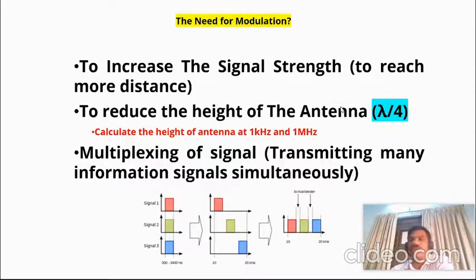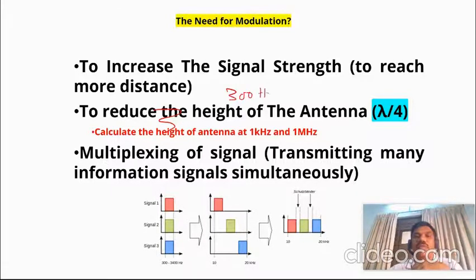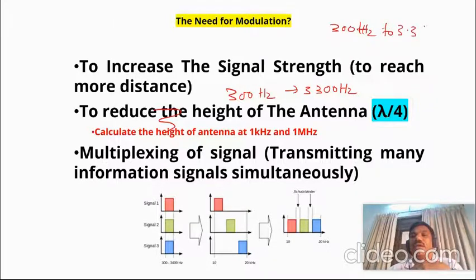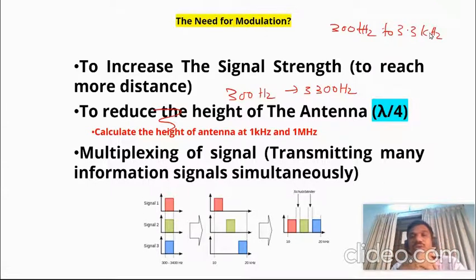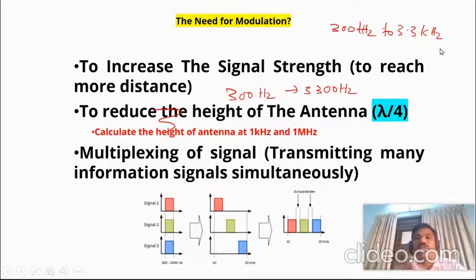Our audible frequency range is from 20 Hz to 20 kHz, but the human voice signal is concentrated in the range of 300 Hz to 3.3 kHz. This is a low frequency signal, and because the frequency is low, the power is very low, meaning the signal will not travel long distances.